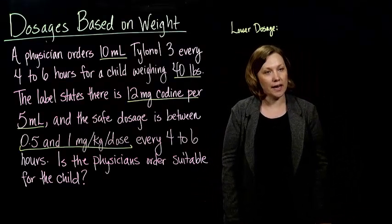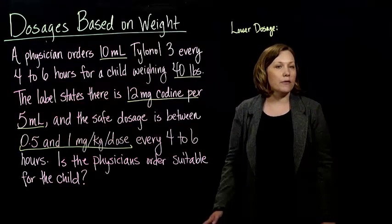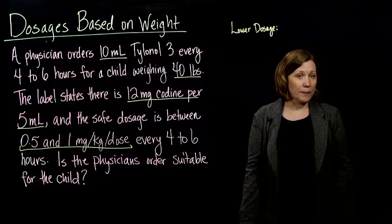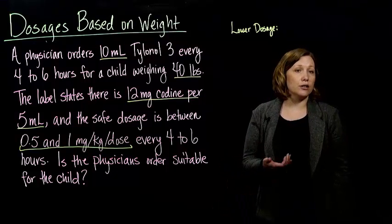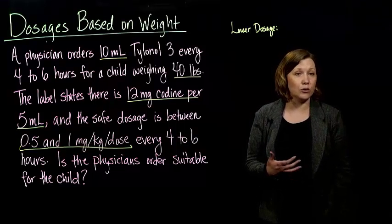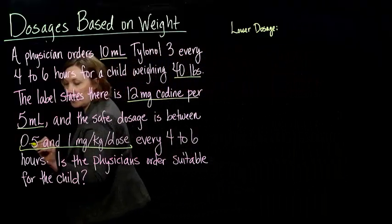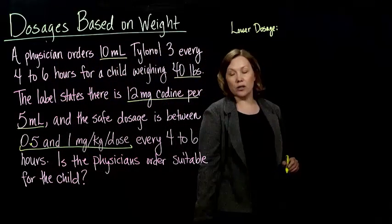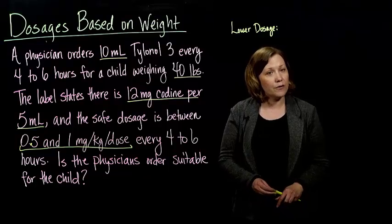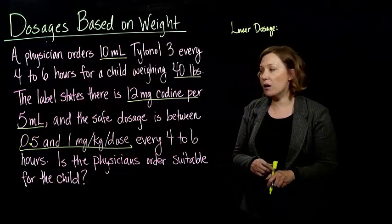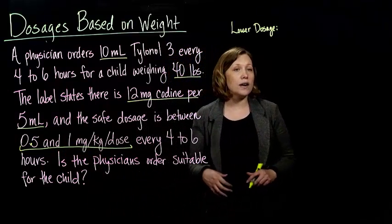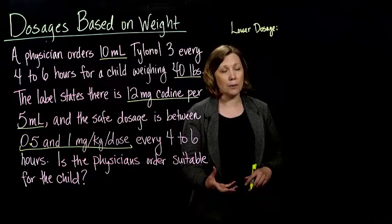Here's another example of a different type of problem. A physician has ordered 10 milliliters of Tylenol 3 every 4 to 6 hours for a child weighing 40 pounds. The label states there are 12 milligrams of codeine per 5 milliliters, and the safe dose is a range between 0.5 and 1 milligram per kilogram per dose every 4 to 6 hours. We want to figure out if the physician's order is suitable for this child — does it fall within this range? We'll calculate a lower safe dosage and an upper safe dosage.